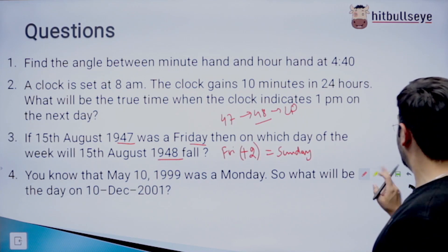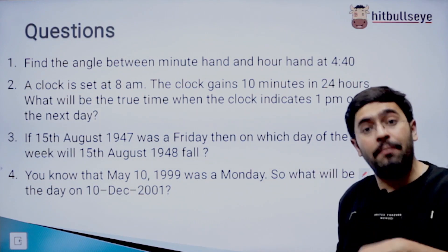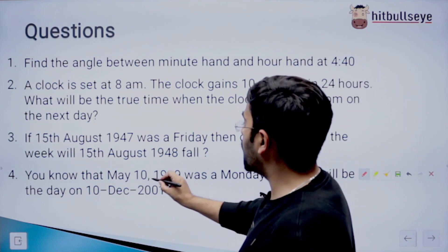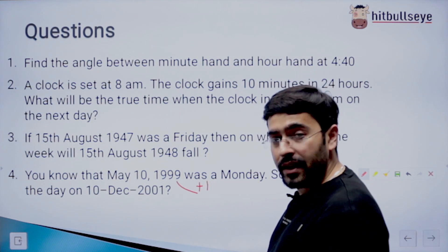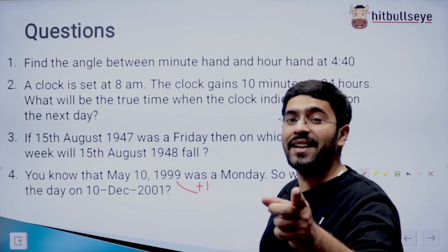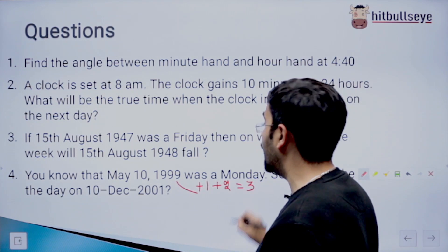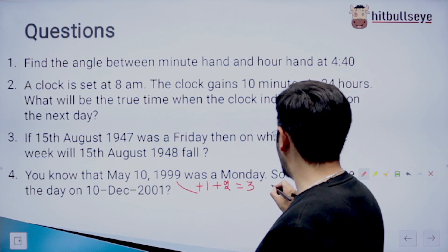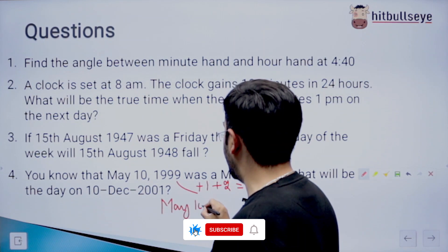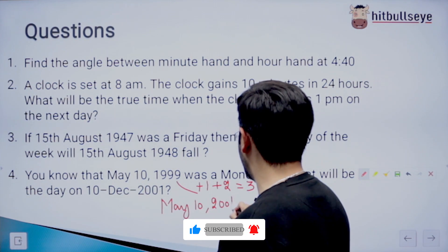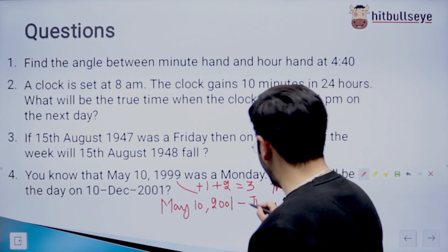So moving on to the next question. The question says, you know that May 10, 1999 was a Monday. So what will be the day on 10th of December 2001? So how will we do that? When we move from May 99 to 2000, the number of days that get added are one. And from 2000 to 2001, because 2000 is a leap year, we add two more days. So these two days make a total of three. So you add three to Monday and we get Thursday. So the first part of the question we have solved is that May 10, 2001 is Thursday. Now we have to reach December 10th of the same year.